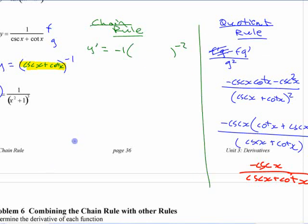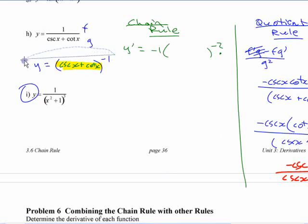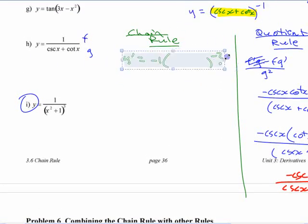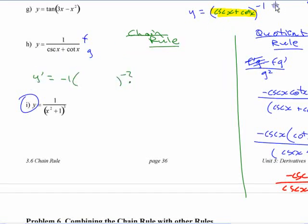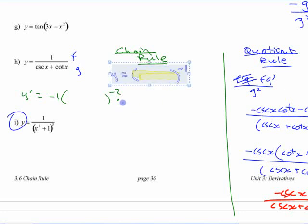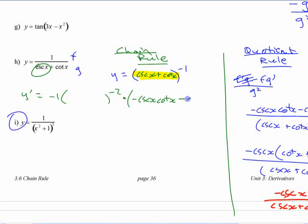And then times the derivative of the inside function. You're going to end up with the same thing as you have on the other side here. Now, I don't have tons of room here, so we're going to have to move this over. I'm going to move this up here. Then you need the other part. So then the other part of this is times the derivative of the inside, right? Which is negative, you wrote it over there, right? Negative cosecant x cotangent x, right? That's the derivative of that. Minus cosecant squared.